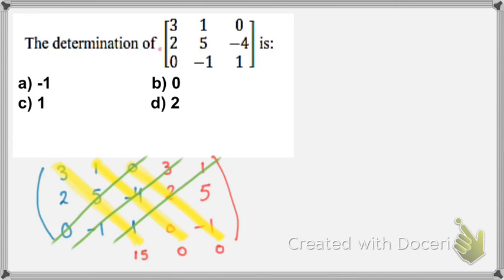0 by 5 by 0: 0. And 3 by negative 4 by negative 1, which is 12. 1 by 2 by 1, which is 2. Then